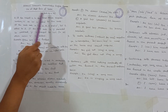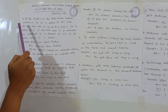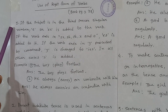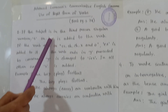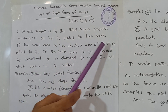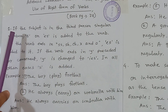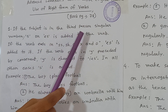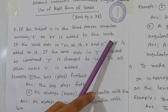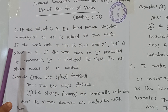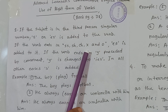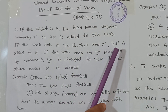In the grammar book, page number 78, you will get this topic. Please follow the board. Rule number one: if the subject is in the third person singular number, S or ES is added to the verb. If the verb ends in SS, SH, CH, X, and O, ES is added to it.